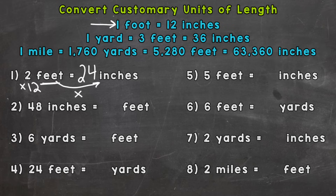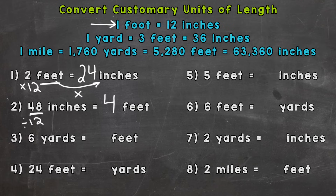Number two, we're going from inches back to feet: 48 inches equals how many feet? We need to split the 48 inches into groups of 12, because each group of 12 is a foot. So we do 48 divided by 12, which gives us four feet. Going from a smaller unit to a larger unit, we use division.